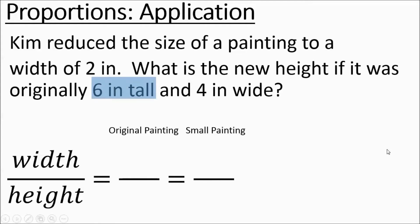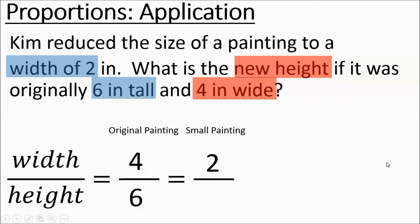They say that the height was originally 6 inches tall. So there's our 6. Then they say that the painting was originally 4 inches wide. So there's the width. The 2 is going to go in the other ratio for the small painting and they said it's a width of 2. So that's going to be a numerator. Some of you might be able to see that half of 4 is 2, half of 6 is going to give you an answer. We're going to go through the process. They say what is the new height and we don't know the new height.